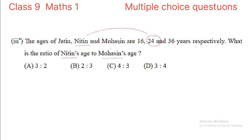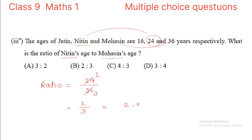Nitin's age is 24 and Mohsin's age is 36. So we have to find the ratio of Nitin's age to Mohsin's age: 24 divided by 36. Simplifying, we get 2 divided by 3. So the ratio is 2 is to 3, which is given at option B. So option B is the correct alternative.